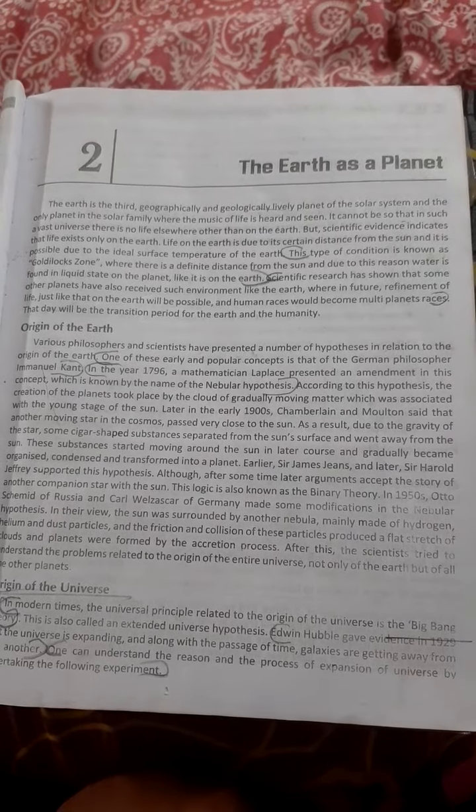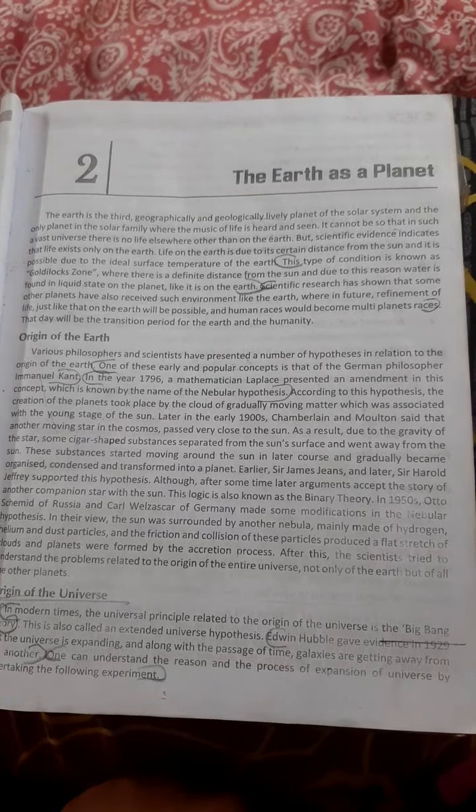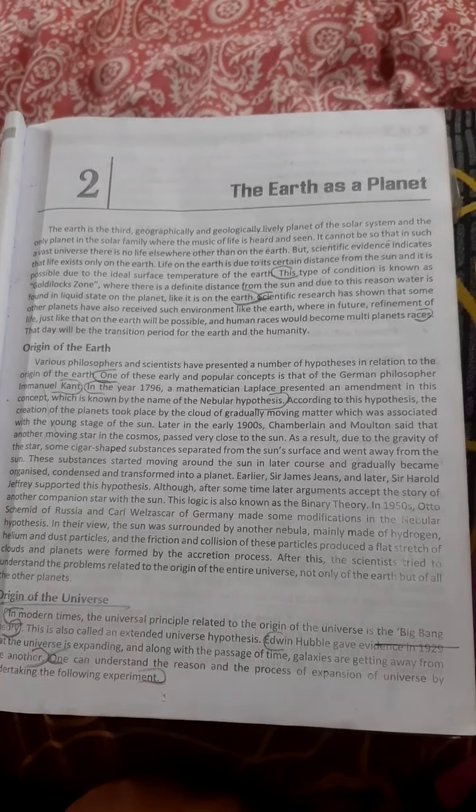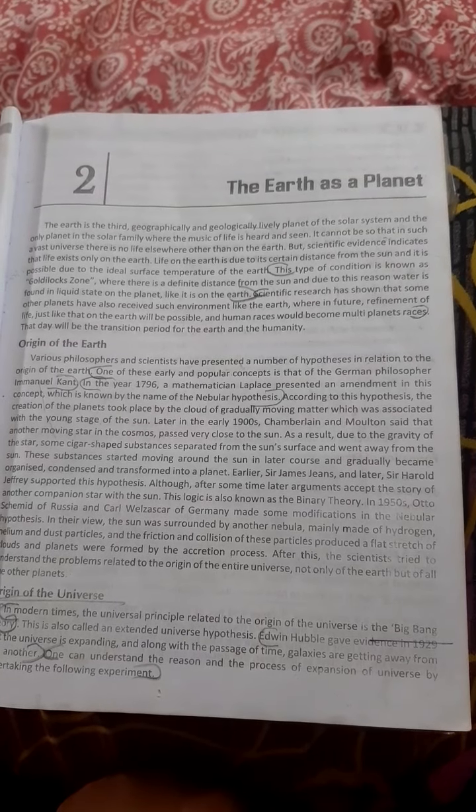According to this hypothesis, the creation of a planet took place by the cloud of gradually moving matters which was associated with the young stage of the Sun.